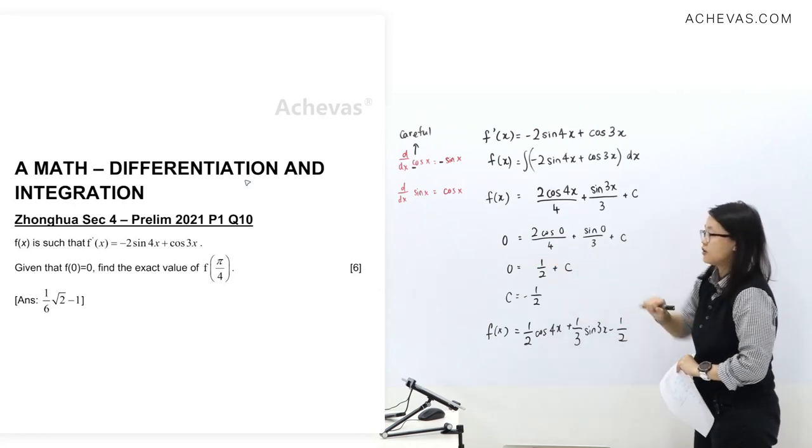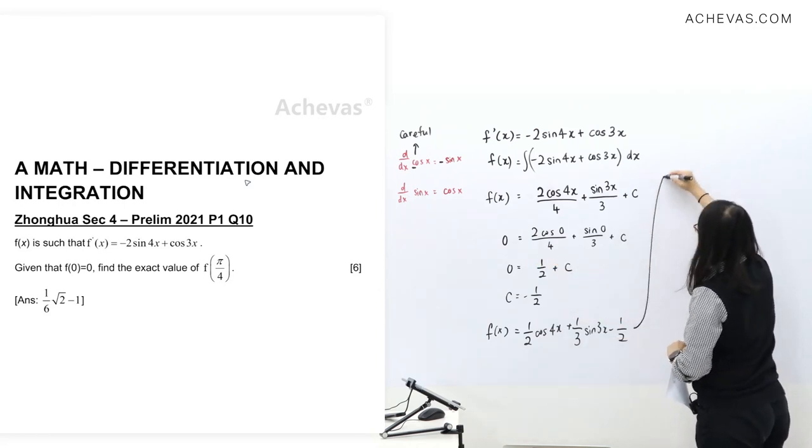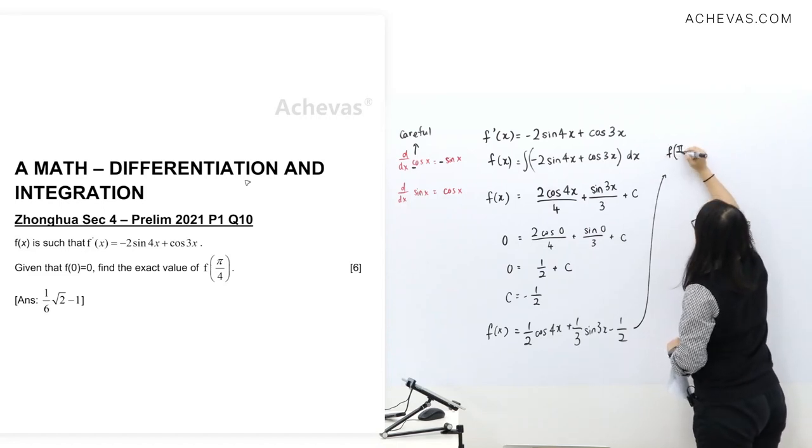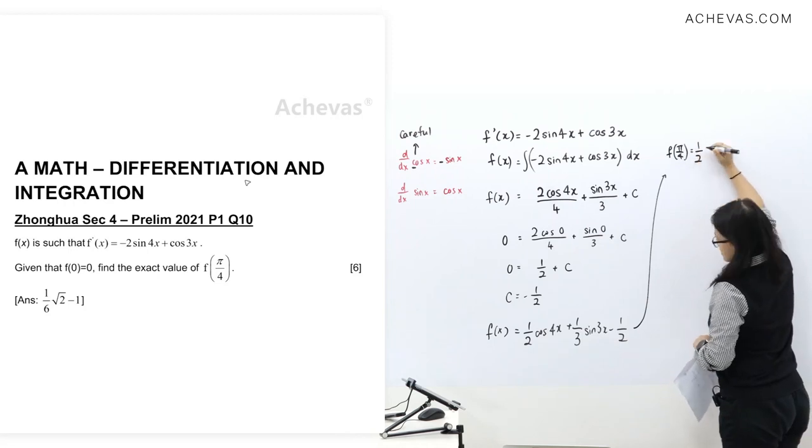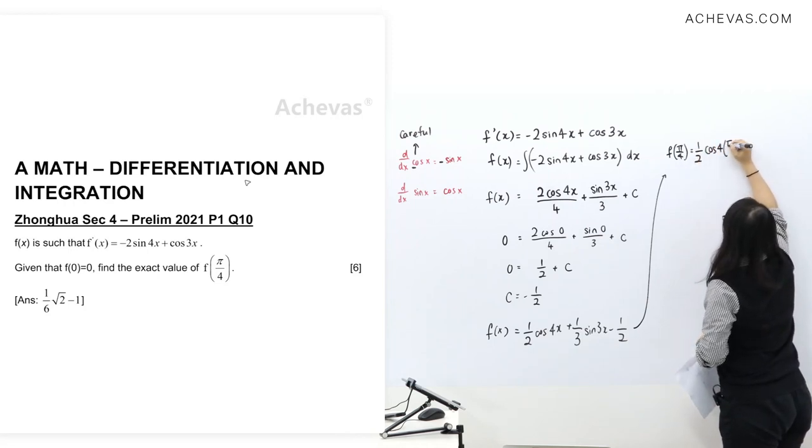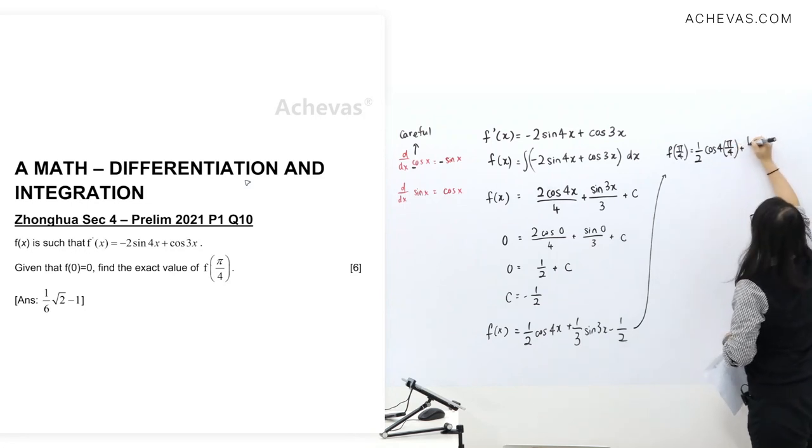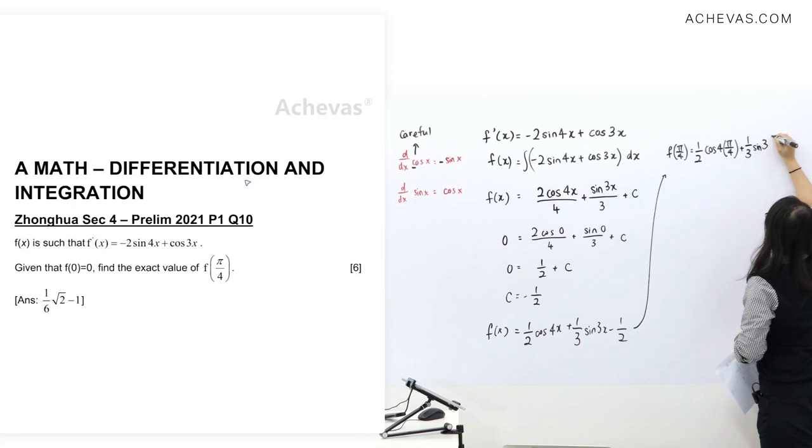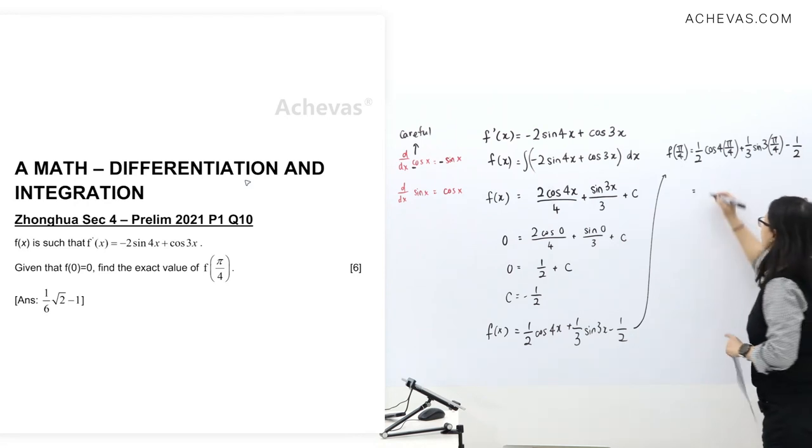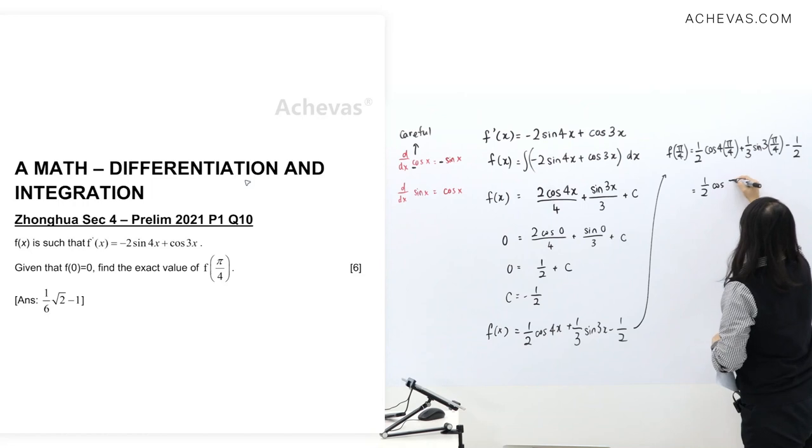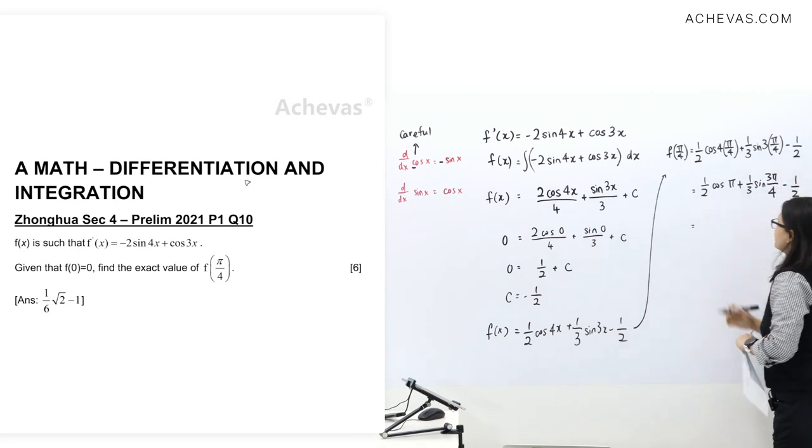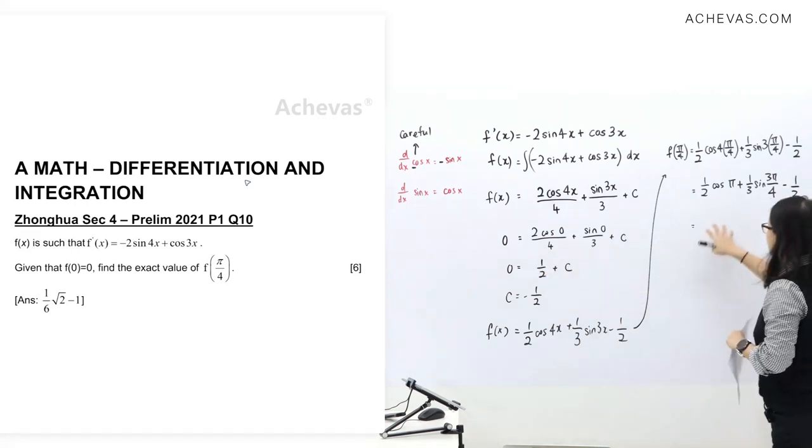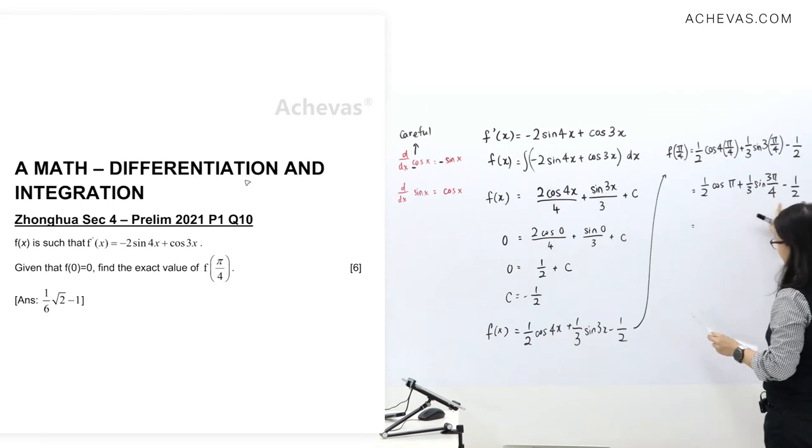So let's do this here. f(π/4), put it in here and simplify. Now, you need to take note that the question says exact value. So we have to find exact value of this and this one.